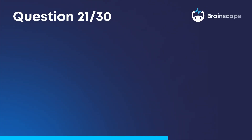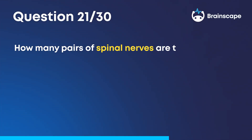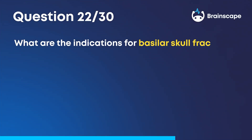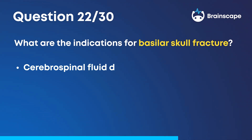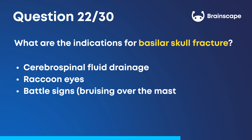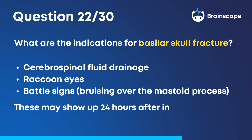Question 21. How many pairs of spinal nerves are there? There are 31 pairs of spinal nerves. Question 22. What are the indications for basilar skull fracture? Cerebrospinal fluid drainage, raccoon eyes, and battle signs, which are bruising over the mastoid process. These may show up 24 hours after injury.